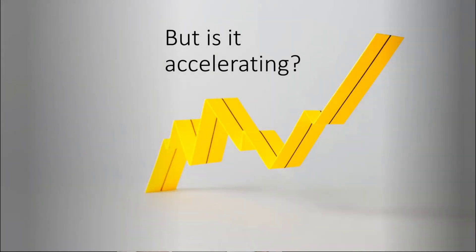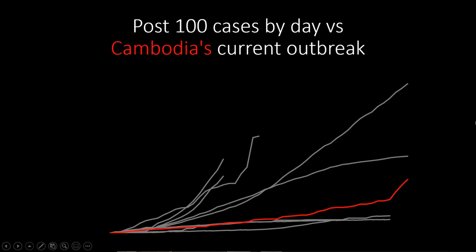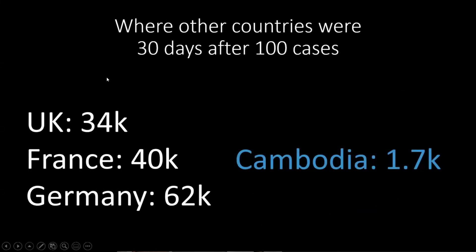Is Cambodia accelerating? Cambodia is playing catch-up, but is it accelerating at the same rate as others? Looking at Cambodia's current outbreak versus other countries in the days after it started — specifically after it hit 100 cases — Cambodia is not doing particularly badly. Thirty days after 100 cases, Cambodia was at 1,700. Look at the European countries — it's just night and day different.